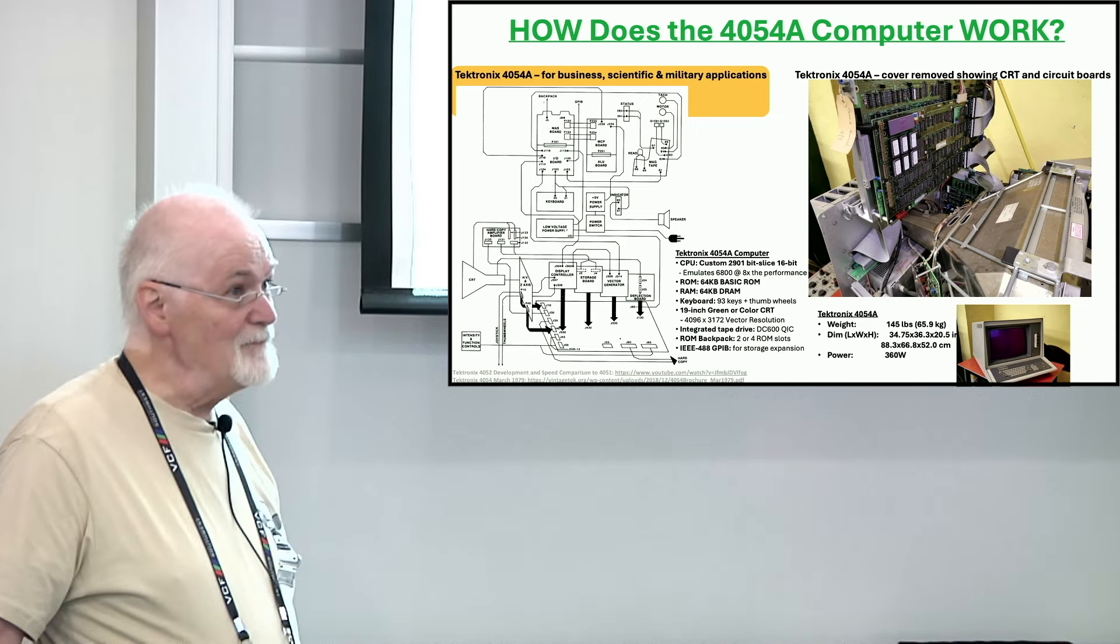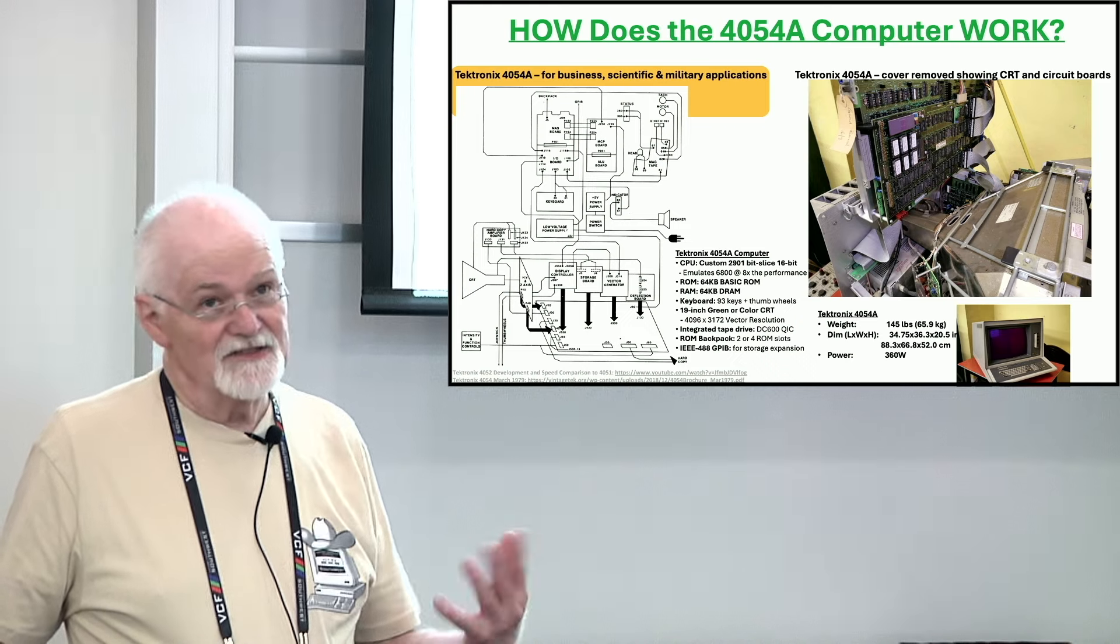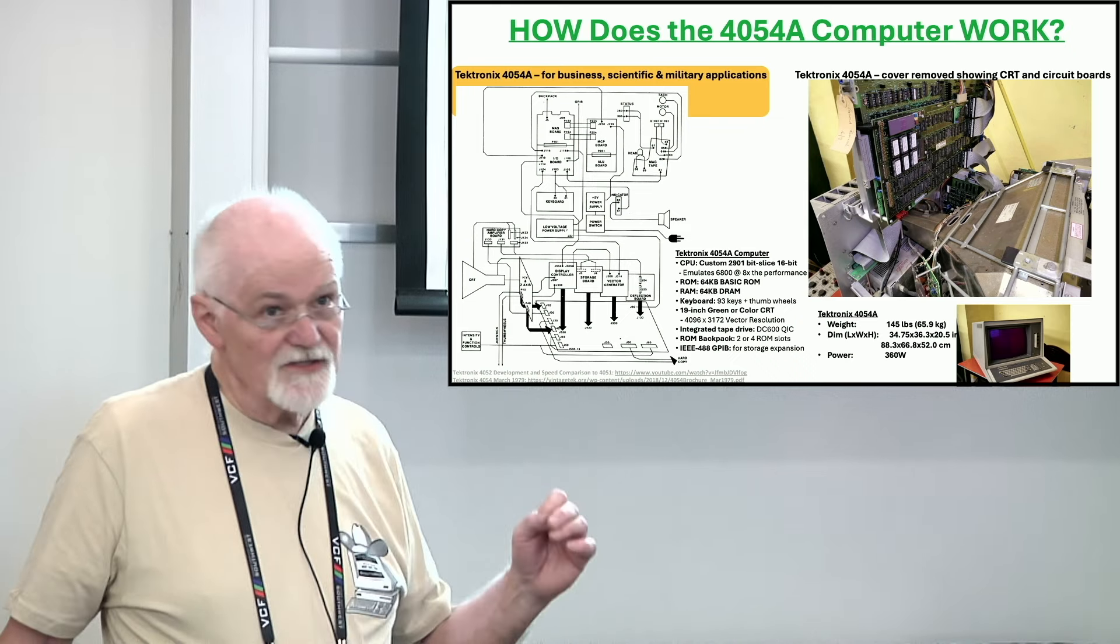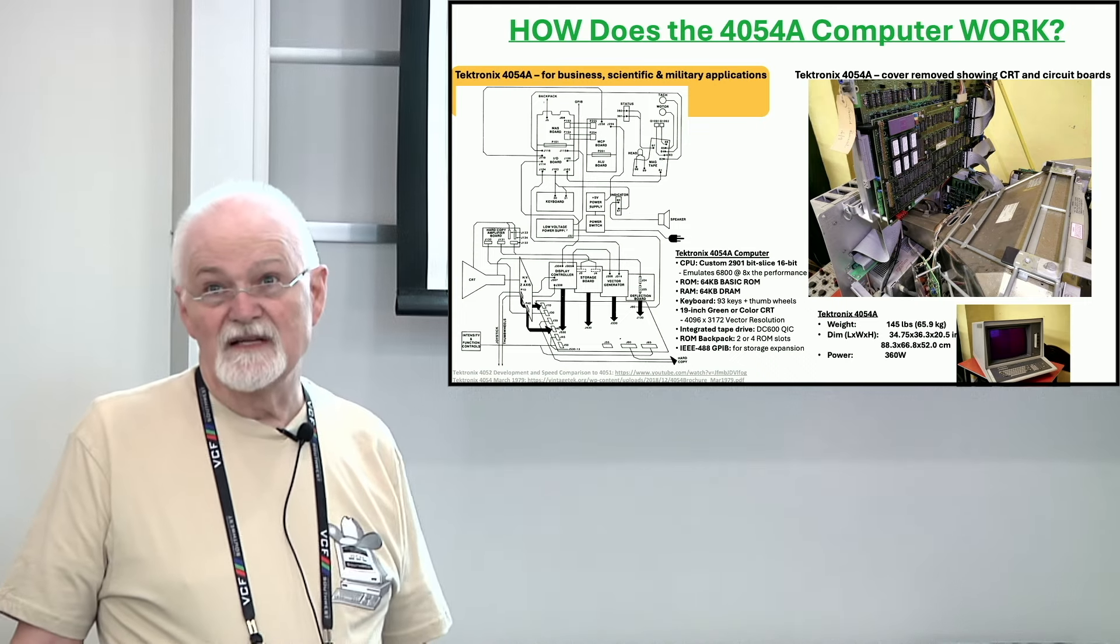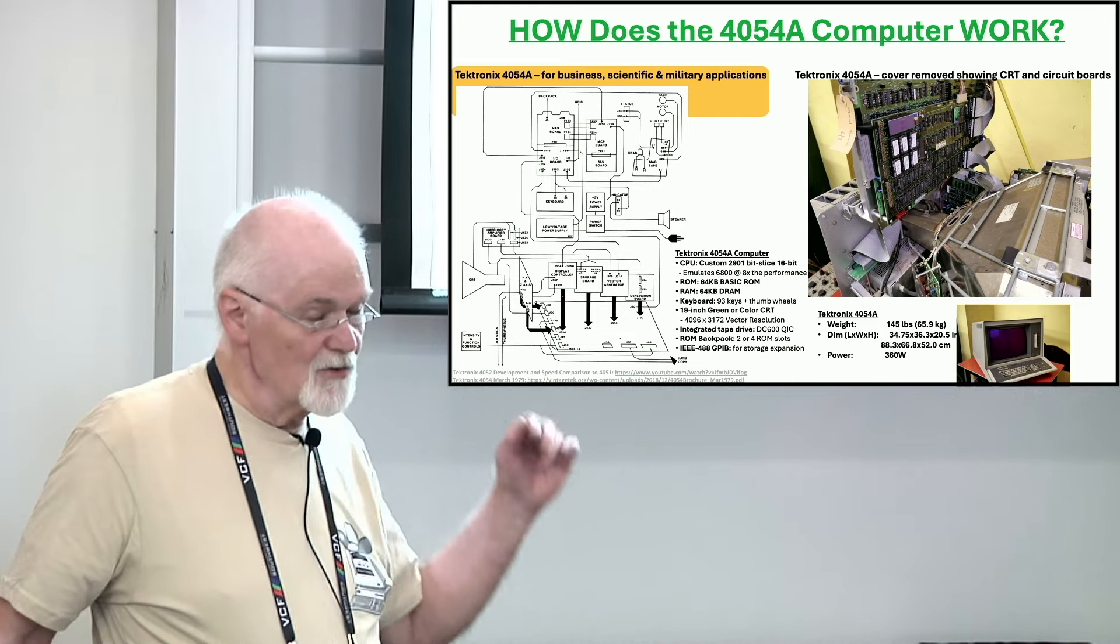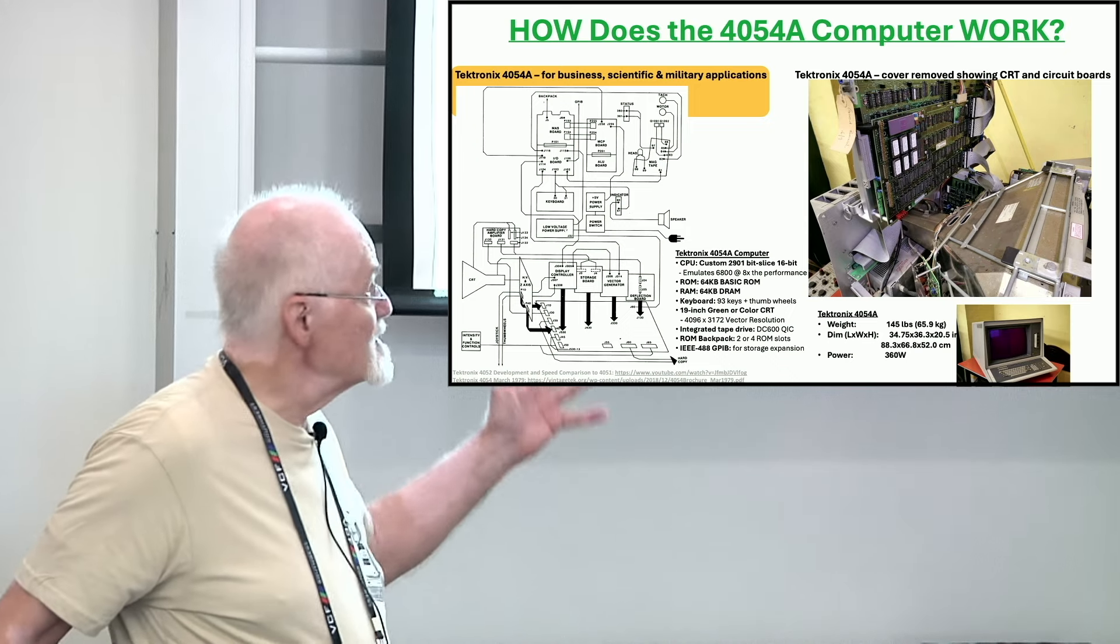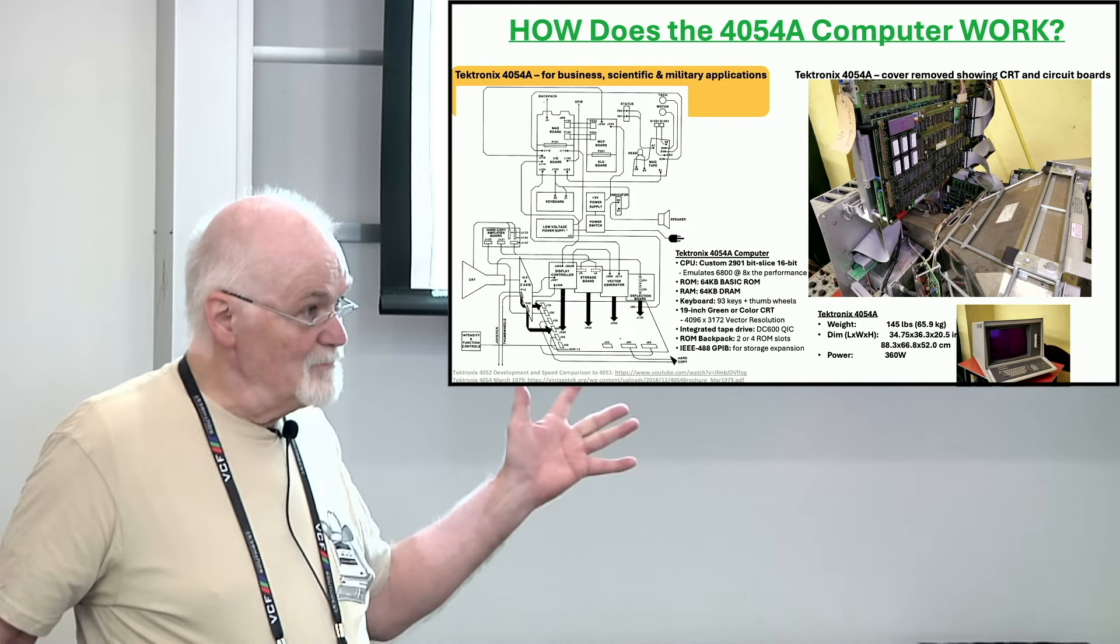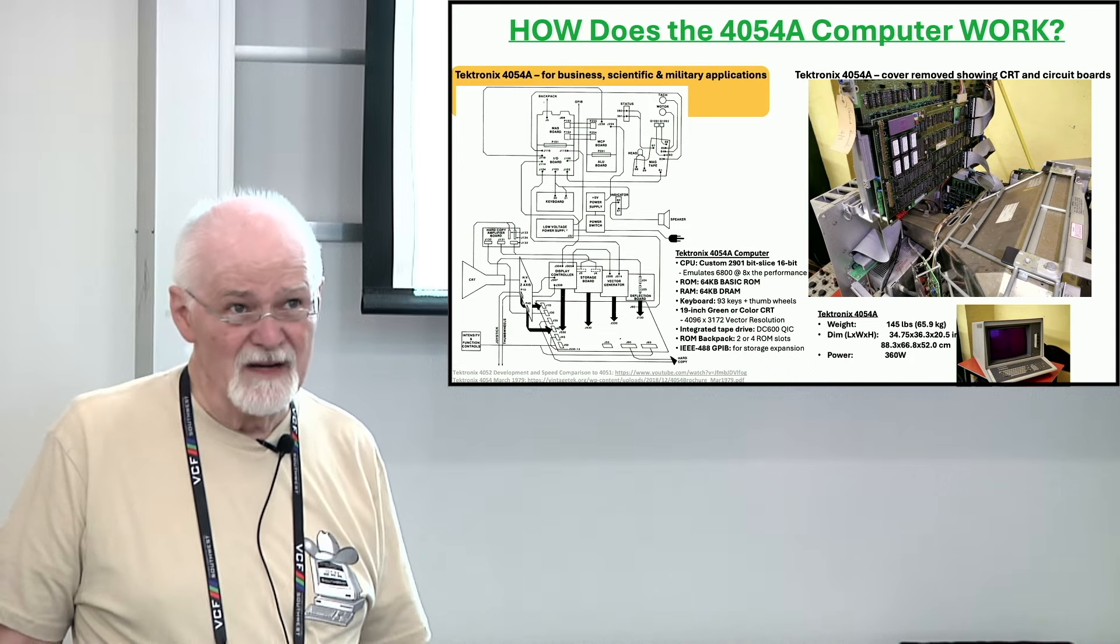Tektronix BASIC only supports floating point, double precision floating point, because the target is business, commercial, scientific math. Floating point, eight bytes, takes a bunch of memory. This particular machine, Tektronix asked Motorola are you going to make faster 6800s, we need faster. Motorola said nope. They decided we'll build our own CPU. This has a bit slice custom bit slice design by Tektronix engineers that provided 16 bits of data and address space got doubled.